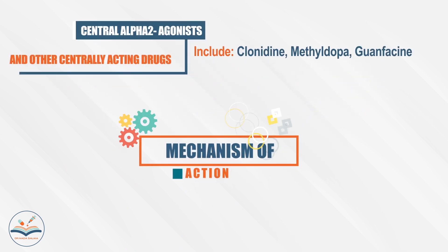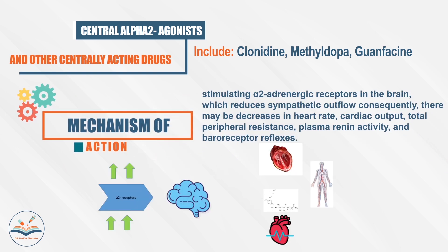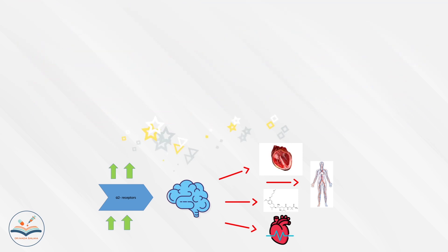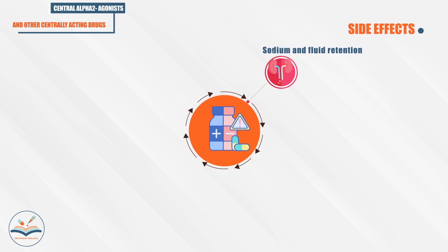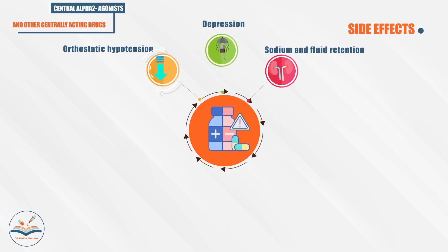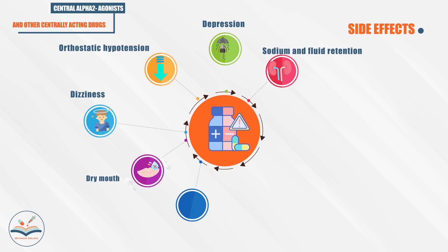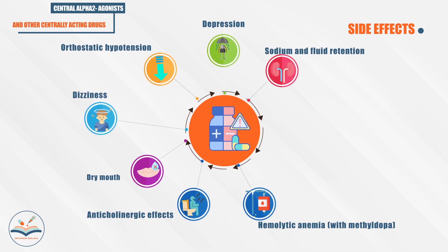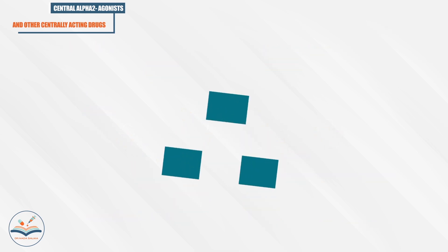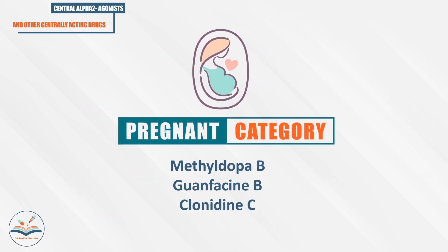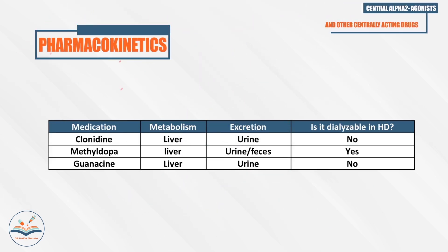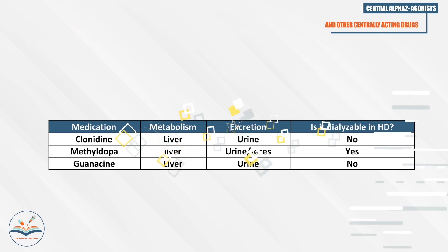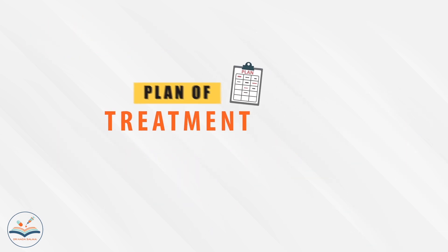Central alpha-2 agonists and other centrally acting drugs, like clonidine and methyldopa, stimulate alpha-2 adrenergic receptors in the brain, reducing sympathetic outflow, thereby decreasing heart rate, cardiac output, total peripheral resistance, plasma renin activity, and baroreceptor reflexes. Side effects include sodium and fluid retention, depression, orthostatic hypotension, dizziness, dry mouth, anticholinergic effects, hemolytic anemia, and hepatitis. Methyldopa and guanfacine are category B and clonidine is category C. Most are not dialyzable.